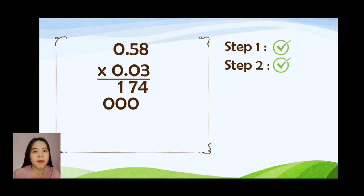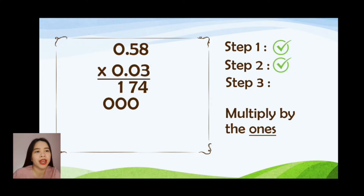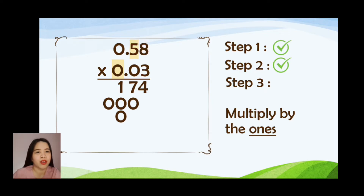Step number 3: multiply by the ones. We are going to multiply 0.58 by 0, and your answer should be written under the ones place value. 8 times 0 will have an answer of 0. 5 times 0 is also 0. And 0 times 0 is 0.